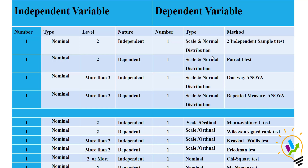In all these cases, the dependent variable is scale data and normally distributed. If the data is scale but not normally distributed, or is ordinal, then you must use non-parametric tests such as the Mann-Whitney U test, Wilcoxon signed-rank test, Kruskal-Wallis test, or Friedman test. If both the independent and dependent variables are nominal, then you must use the chi-square test.